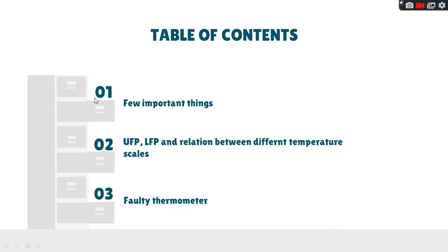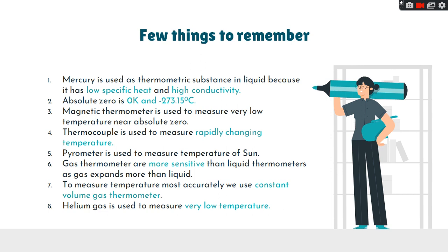Our topic will be divided into three parts. First, I will be talking about a few important things in thermometry, then we have upper fixed point, lower fixed point, and relation between different temperature scales, and then we have faulty thermometer cases.